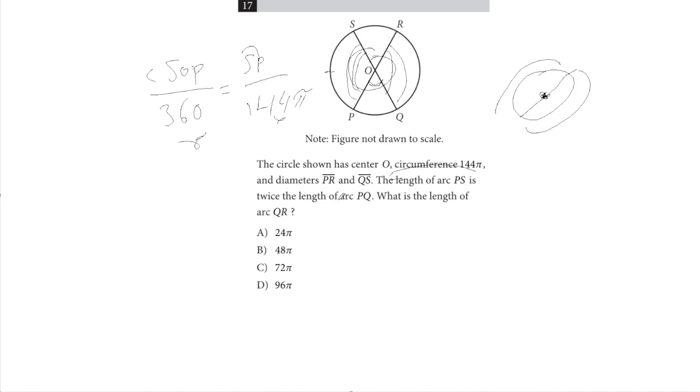So now we know that the length of SP is double the length of PQ. So let the length of PQ be X, just for the sake of simplicity. So then we know X plus the length of SP, which is 2X,